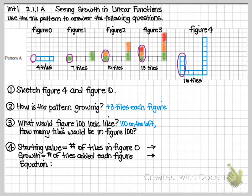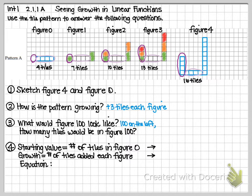Now let's think about the middle. Every single one of the color-coded figures has those four tiles chilling in the middle. Four in the middle on figure zero, four on figure one, four on figure two, four on figure three, four on figure four. I think the four in the middle isn't going to change — so four middle bottom for figure 100.